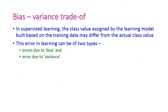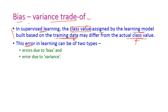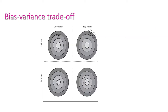Next, let us see the bias-variance trade-off. In supervised learning, the class value is assigned by the learning model based on the training data. The training data may differ from the actual class value. If there is any deviation, then errors may occur. The errors are of two types: first is error due to bias, and second is error due to variance.